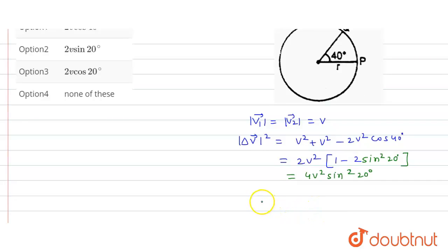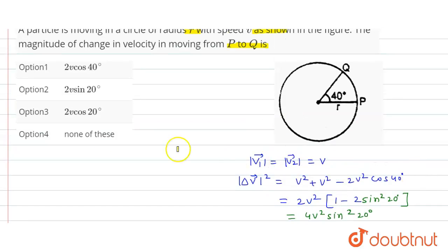Or we can write the change in velocity del v is equal to 2v sine 20 degrees. This will be our answer. So see the option—2v sine 20 degrees, option second is the correct option. Thank you.